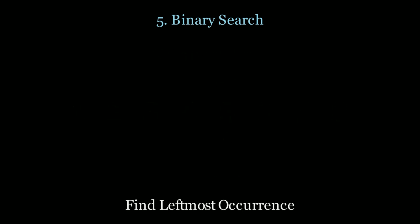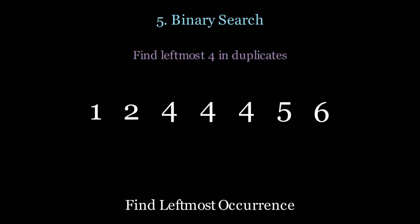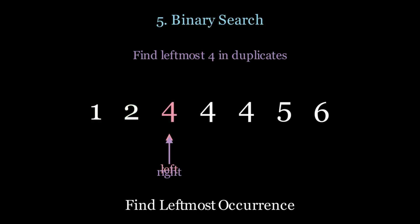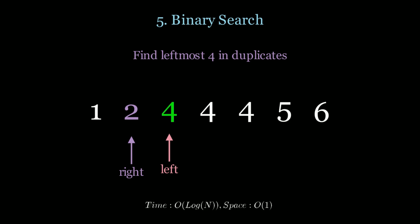Now let's take a look at a different example: finding the leftmost occurrence of a duplicated value — in this case, four. We need to be smart with how we move the left and right pointers such that the left pointer is where the result is at the end of the algorithm. This also occurs in log n time.